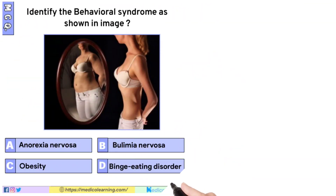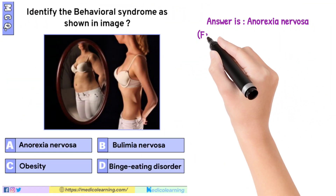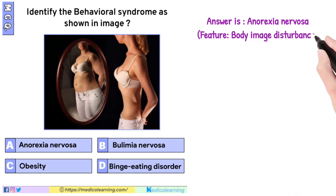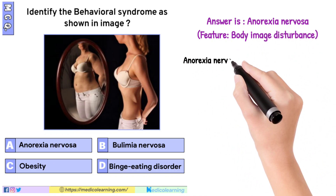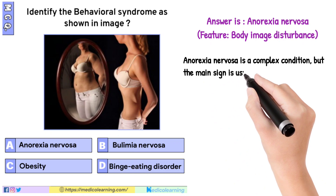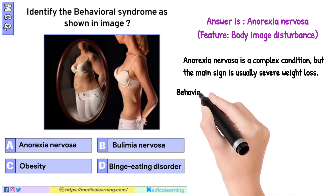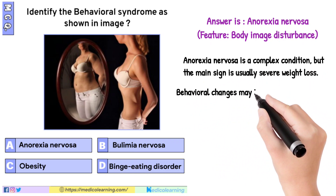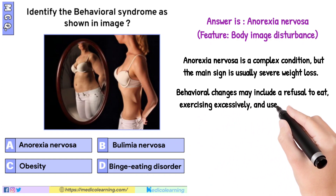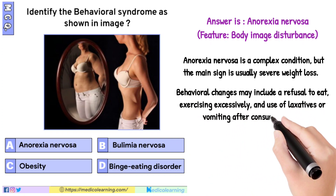In this question the answer is Anorexia nervosa. The key feature is body image disturbance. Anorexia nervosa is a complex condition, but the main sign is usually severe weight loss. Behavioral changes may include a refusal to eat, exercising excessively, and use of laxatives or vomiting after consuming food.